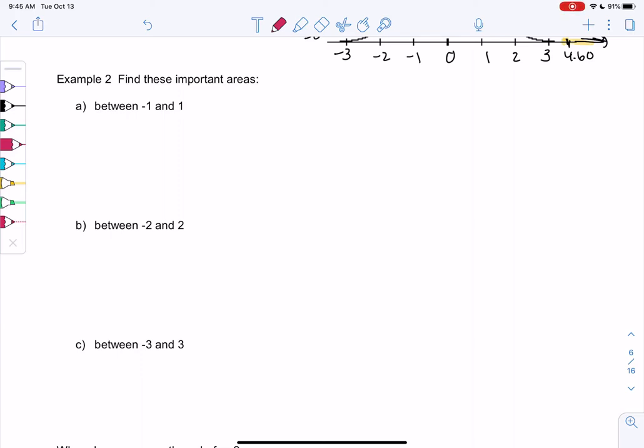In Section 6-2, we're going to look at Example 2, Find These Important Areas. So we're looking at the normal curve, and we want to find the area between negative 1 and 1.